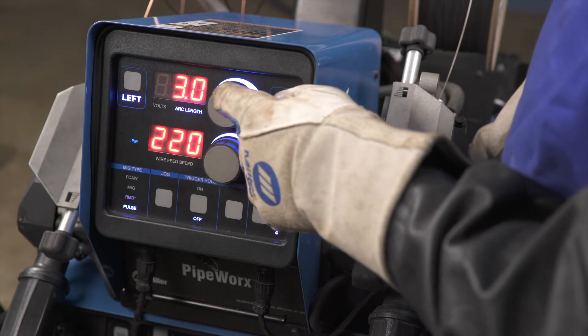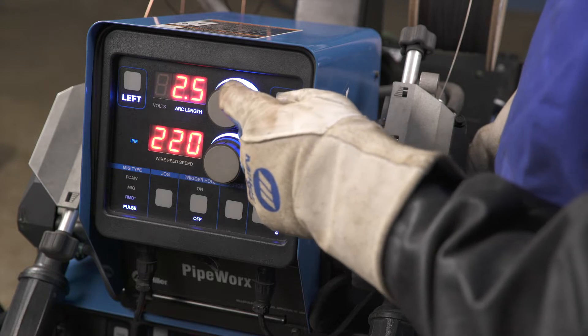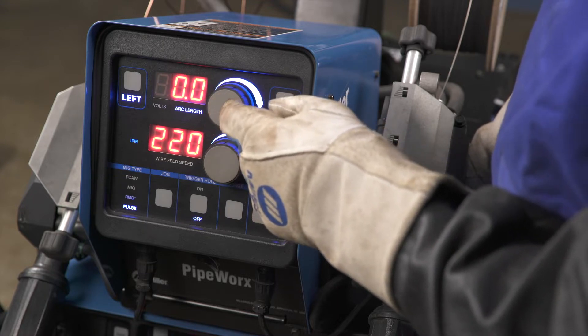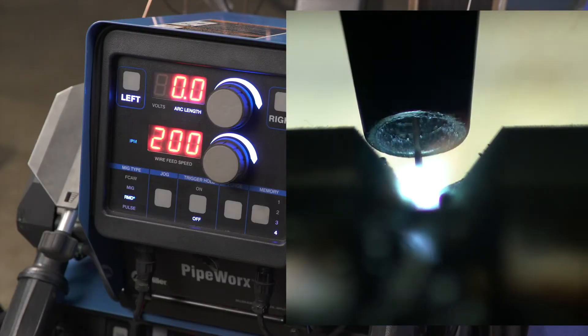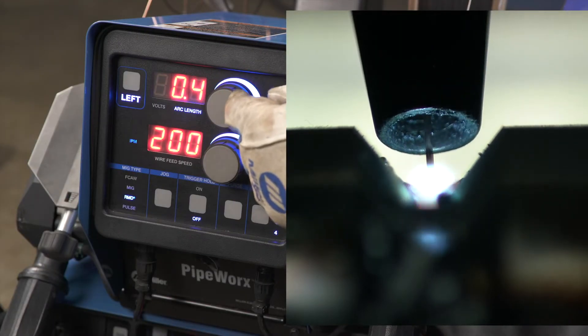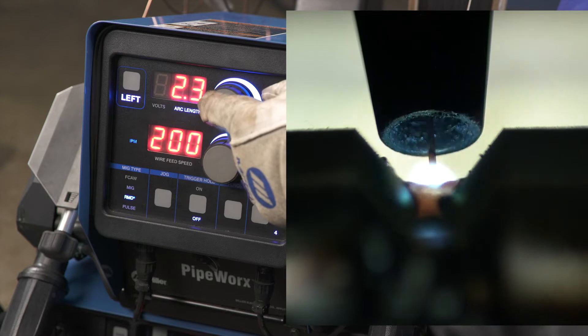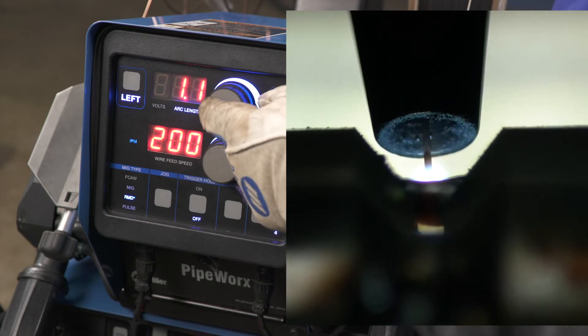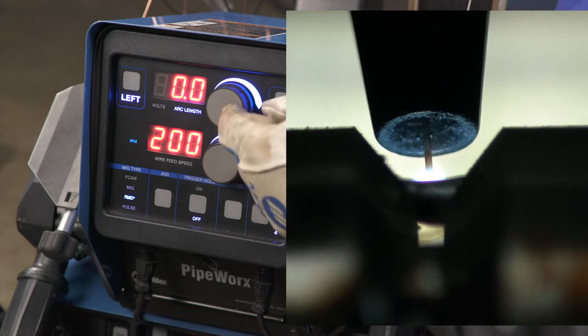Increasing arc length increases the actual arc length. Likewise, decreasing arc length shortens actual arc length. Arc length in RMD is not very noticeable due to the relatively low welding current, but can be used to fine-tune the arc to the welder's preference. 0.0 is the recommended starting point.